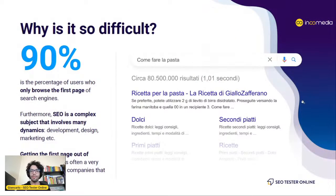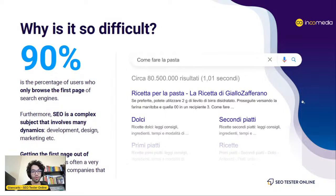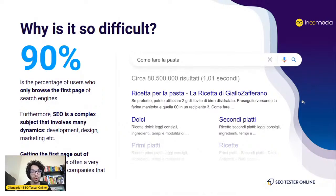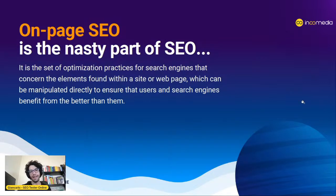Ranking on Google and getting new visits is very difficult because 90% of users on Google visit only websites on the first page, especially the first three positions. You must be on the first page of Google to let your website be a business asset and get a return on investment. SEO is one of the tools you have to improve your visibility and your brand's visibility.